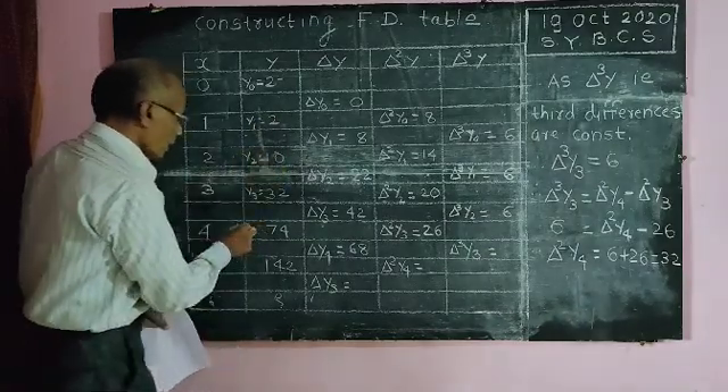After that, this delta y 0, because this is y0, this is y1, this is y2, y3, y4, y5 and y6, that means value of y at x is equal to 6, we have to find out. Now, you know how to get this: 2 minus 2, 0; 10 minus 2, 8; 32 minus 10, 22. In this way, I have constructed this table. You try it to find out each and every value.